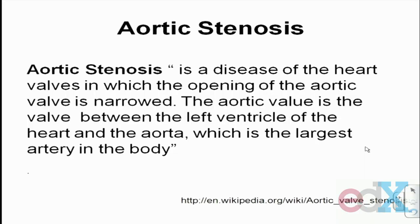Let me start with an example where the disease we're looking at is aortic stenosis. For those of you who are not clinicians, I looked at Wikipedia: it is a disease of the heart valves in which the opening of the aortic valve is narrowed. The aortic valve is the valve between the left ventricle of your heart and the aorta — the largest artery of the body. Aortic stenosis is a malformation of that valve in which the valve is narrowed and less blood can flow through.